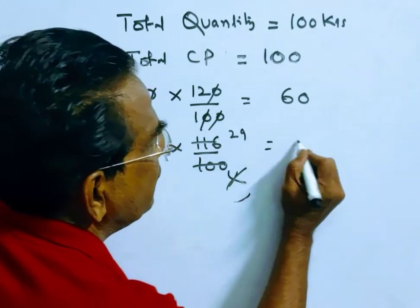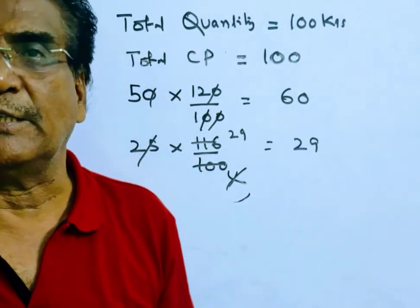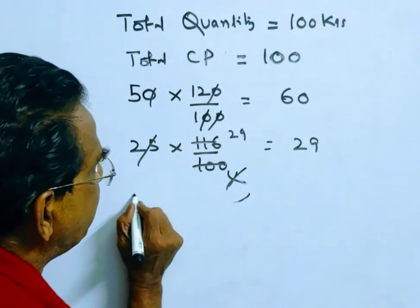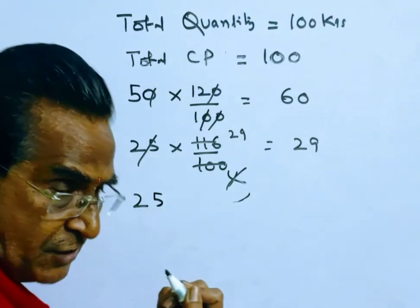And the remaining quantity, that is the remaining quantity is 25 kgs. 50 plus 25 is 75. So the remaining quantity is 25.